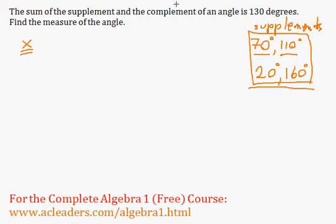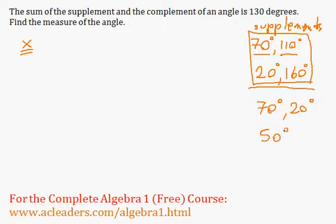Now let's look at complements. What is the complement of 70 degrees? That would be just 20, because complementary angles add up to 90. So the complement is whatever angle added to the original gives us 90 degrees. The complement of 70 is 20.